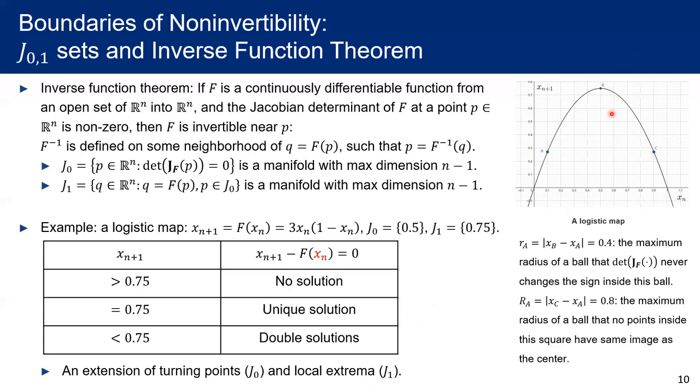And if xn plus one goes from above point B, approaching point B, and then below the point B, the number of its inverses are changed from zero, one, to two.